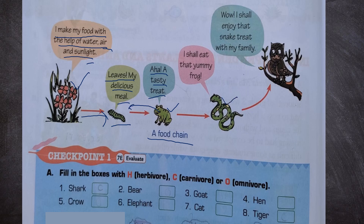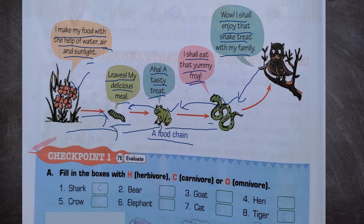Now a snake is saying: I shall eat that yummy frog. And owl eats snake, saying: wow, I shall enjoy that snake treat with my family. So this is a food chain where plant is eaten by caterpillar, caterpillar is eaten by frog, frog is eaten by snake, and snake is eaten by owl.